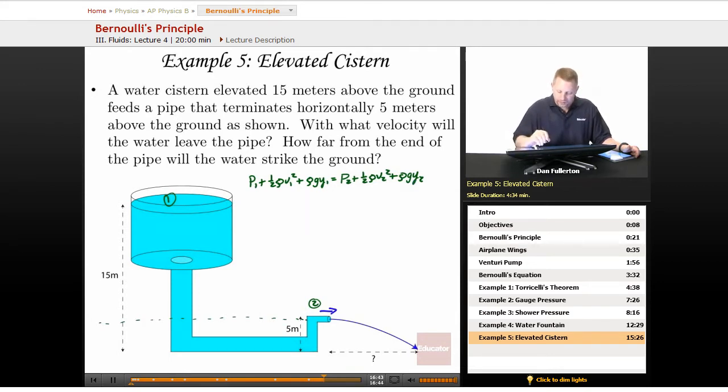All right, as we look at that, some simplifications we can make. P1 is open to atmosphere, p2 is open to atmosphere, they'll have the same pressure, we can subtract those out of both sides. V1 is going to be roughly zero, we can make that go away. On the right hand side, if we're calling this the zero height level for the first part of our problem, setting that as our zero and the height here is 10, we can make that term go away.